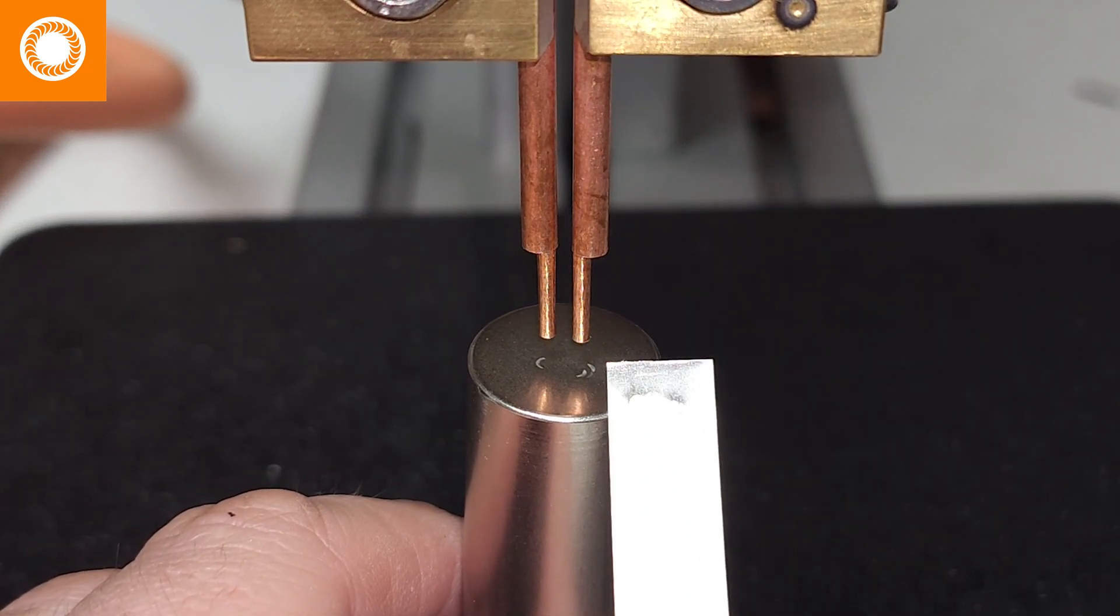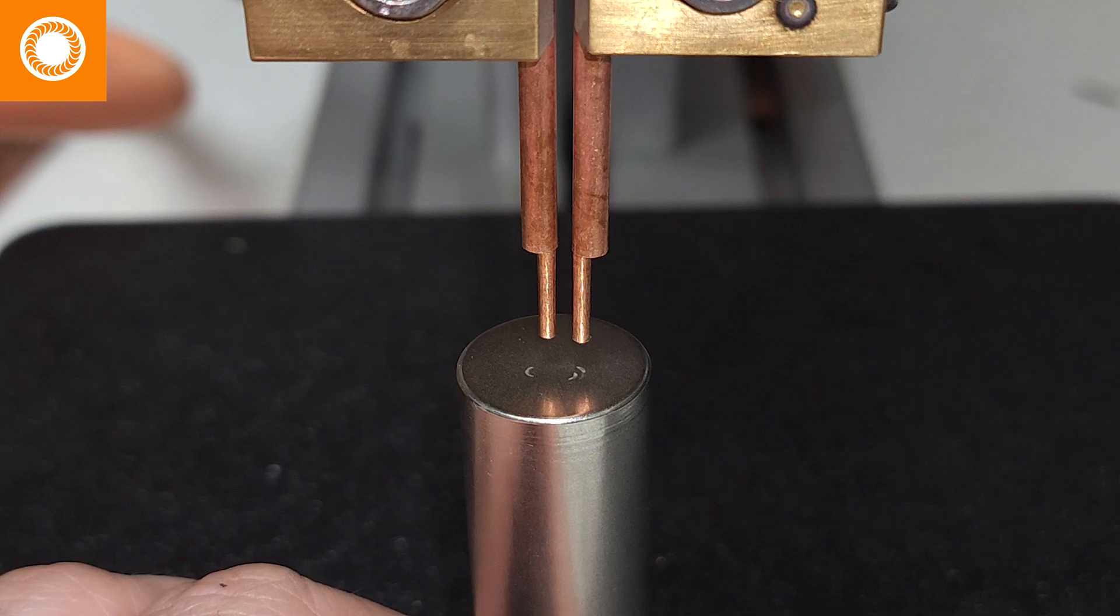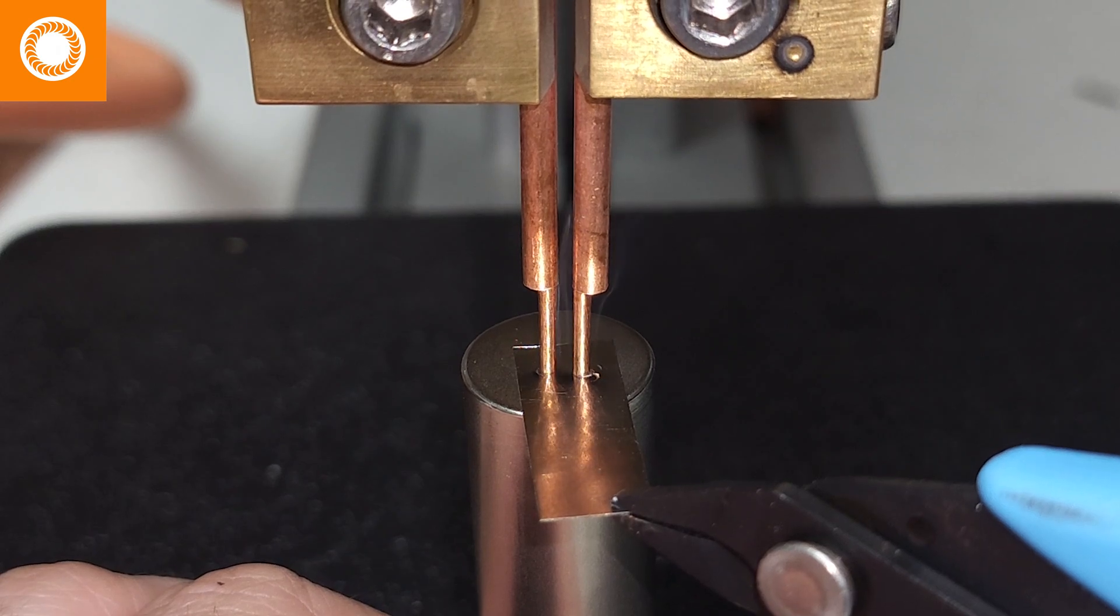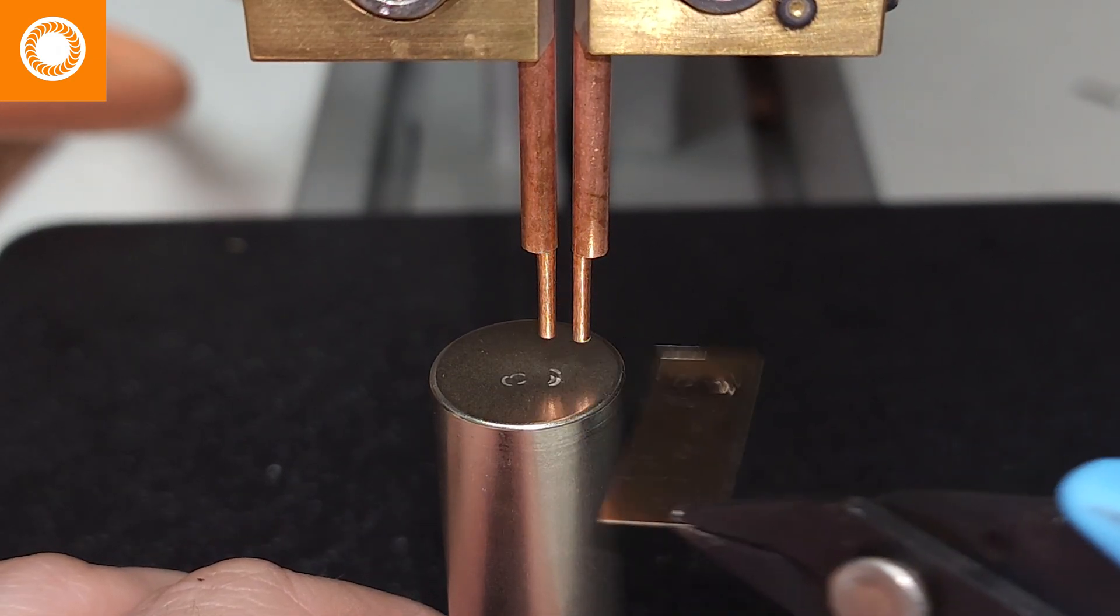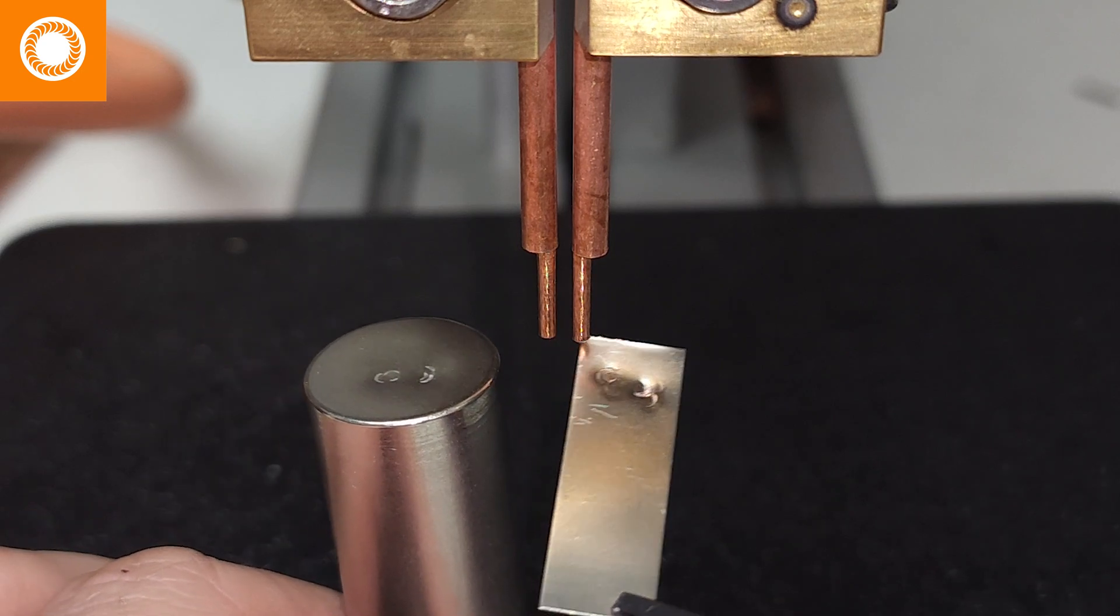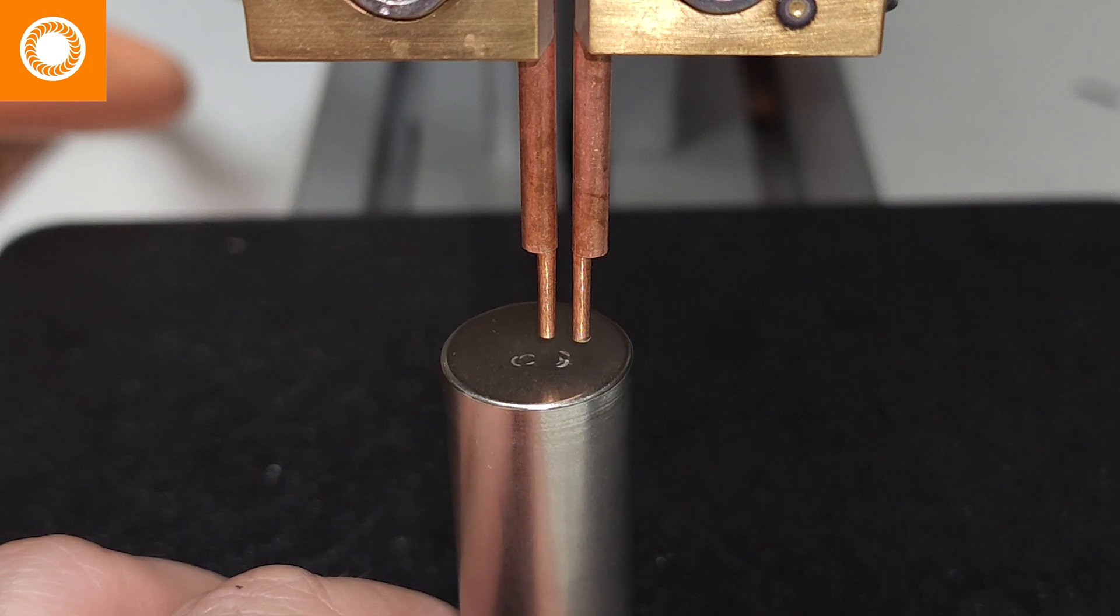I would repeat this process until I got a weld that I liked. This can vary based off of the contacting surface, the thickness of your tab, and so forth.